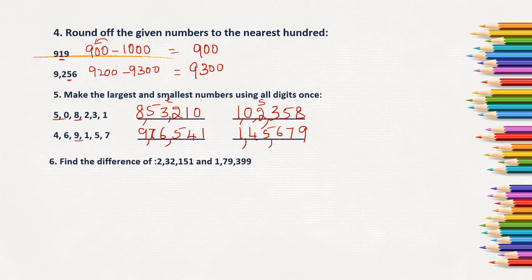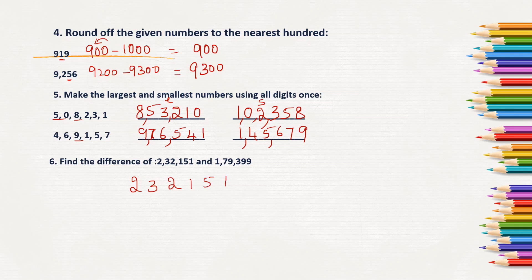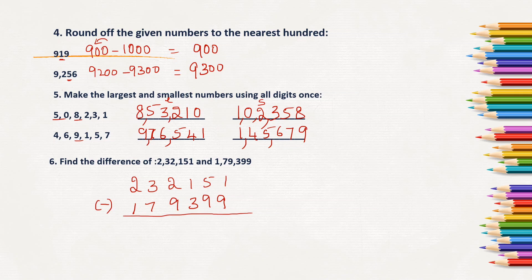Next: find the difference of 2,32,151 and 1,79,399. Write the greater number first and the smaller number below it. Difference means subtraction — you cannot take a bigger number from a smaller number, so always write the bigger number on top. We subtract column by column: ones, tens, hundreds, thousands, and ten-thousands, borrowing from the next left-hand digit when required.